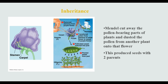In order to cross-pollinate two different types of pea plants, he had to perform some surgeries on them. Mendel cut away the pollen-bearing parts of one plant and then dusted the pollen from the other plant onto that flower. This produced seeds with two parents.